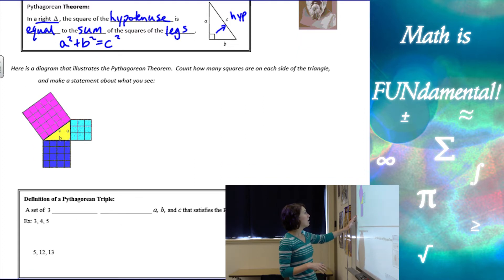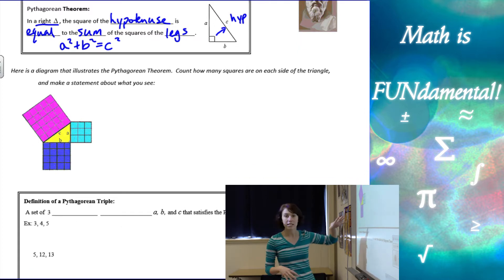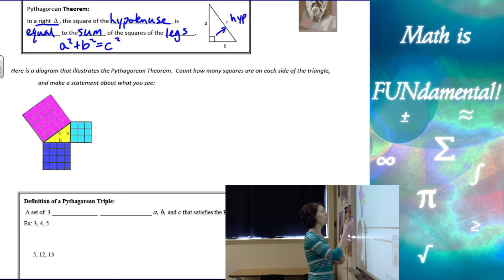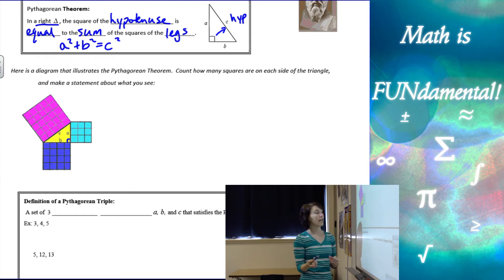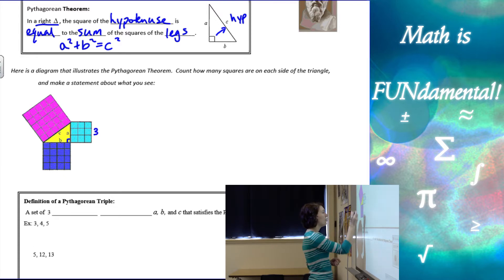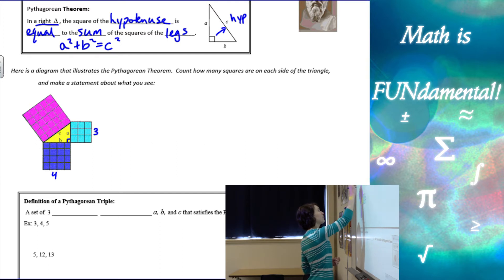This diagram here, where you see these squares, is an illustration of what the Pythagorean Theorem really means. If we take a right triangle with sides length a, b, and c and put numbers to those lengths — counting those squares — the length of a is 3, b is 4, and c is 5.